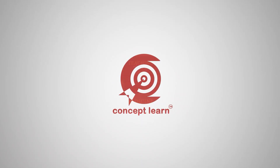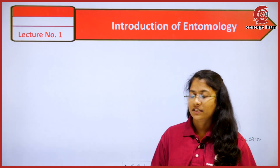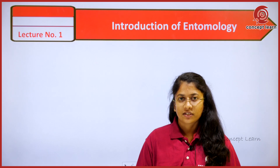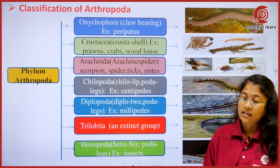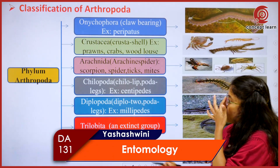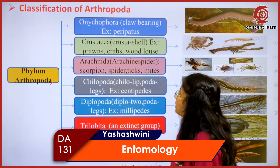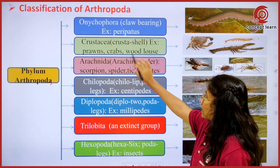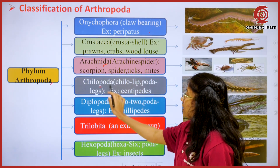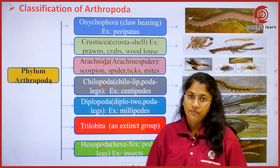Welcome to Concept Learn. Hello everyone, this is Yeshya Swini. Today I will be dealing with the classification of Phylum Arthropoda. This phylum is totally divided into Onycophora, Crustacea, Arachnida, Chilopoda, Diplopoda, Trilobita, and Hexapoda.